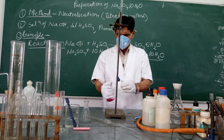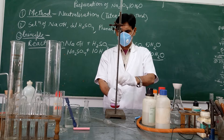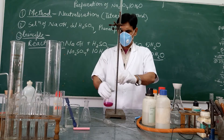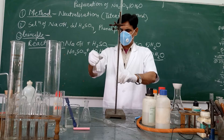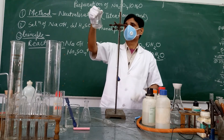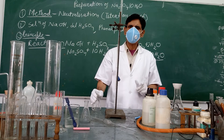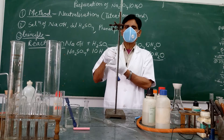Now I am adding this solution drop by drop with constant shaking until the pink colour disappears. I add the acid with constant shaking, drop by drop — do not add it suddenly. The pink colour disappears here. This is called the end point — the stage at which exactly the NaOH solution is neutralized by H2SO4, and none of the components is in excess.